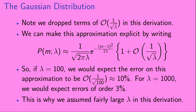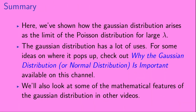In summary, we've shown how the Gaussian distribution arises as the limit of the Poisson distribution for large lambda. The Gaussian distribution has a lot of uses. For some ideas on where it pops up, check out 'Why the Gaussian distribution, or normal distribution, is important,' available on this channel. We'll also look at some of the mathematical features of the Gaussian distribution in other videos.